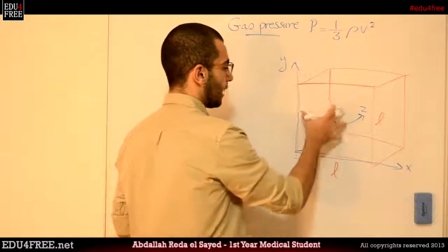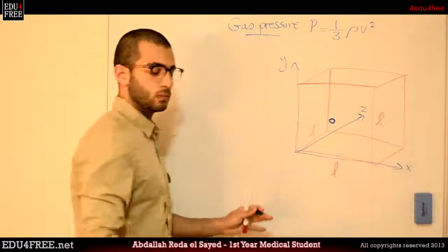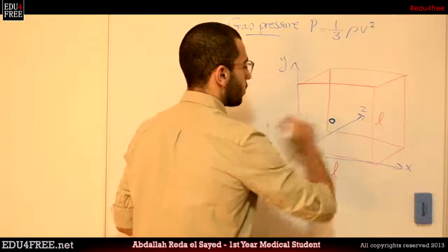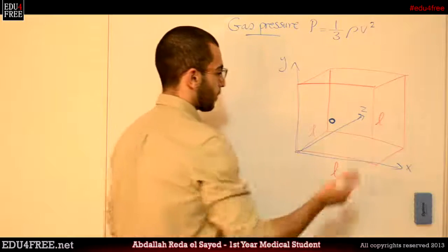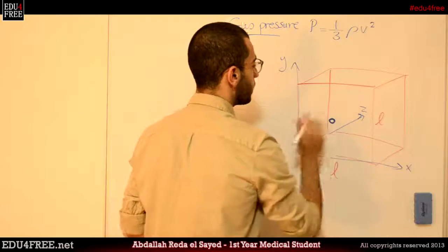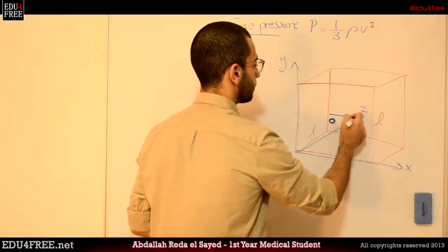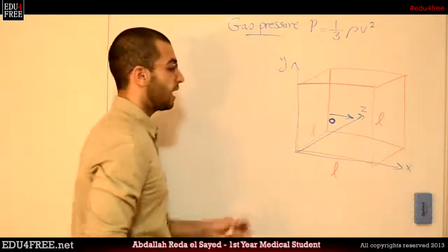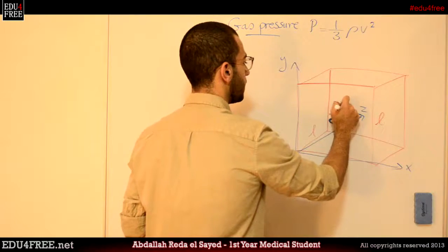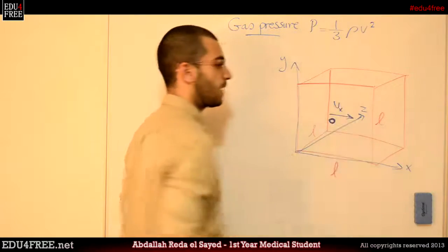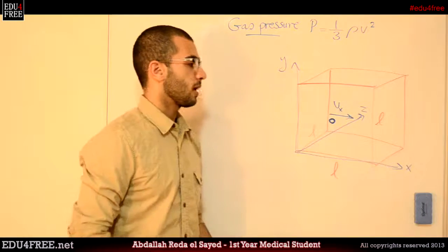We will just take the vector of the x-direction for now — the horizontal movements of the particle. This particle is moving with a velocity in the x-direction, which we will call Vx.